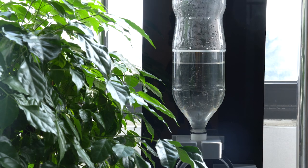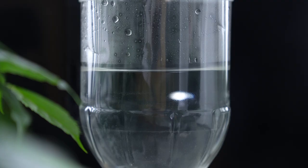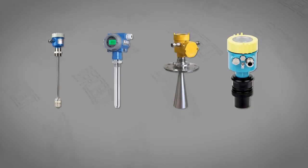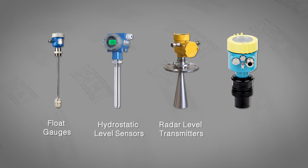So how do we know if the water tank is nearly empty? Here we need to measure its water level. And there are many devices to do that, such as float gauges, hydrostatic level sensors, radar level transmitters, and ultrasonic level sensors.